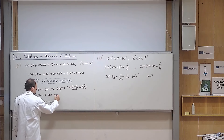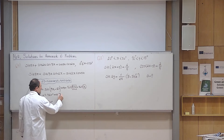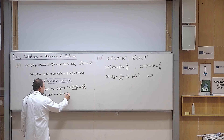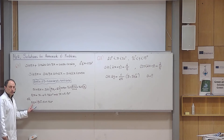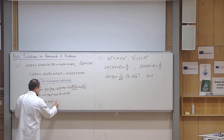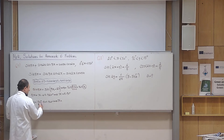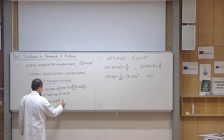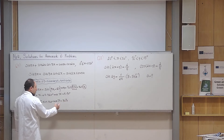From the first case, I move x to the left, it becomes 4x, and I divide everything by 4, so x equals n times 90 degrees. From the second case, I move x to the other side, it becomes 6x, and I divide everything by 6. So x equals 30 plus n times 60 degrees.